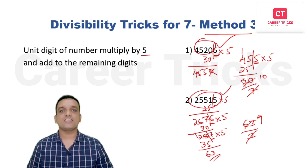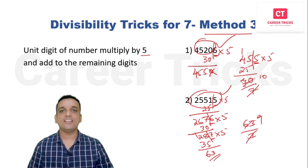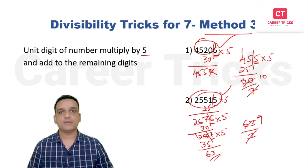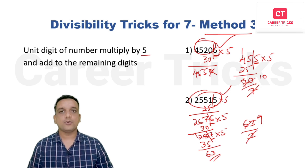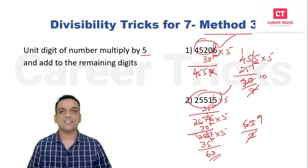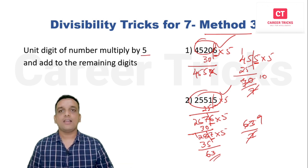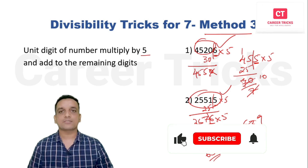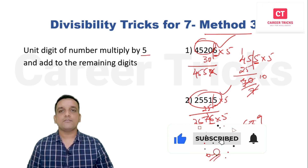This is a very simple trick. We covered three methods in this video. Whichever method is easier for you, choose that one to solve divisibility by seven. When the number of digits is large, choose the first method. When digits are fewer, you can choose either the second or third method, whichever you are comfortable with. Thank you.